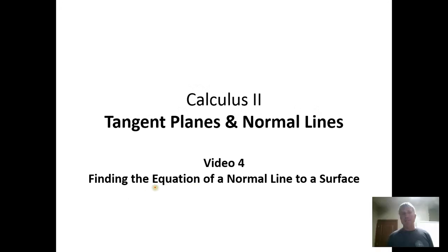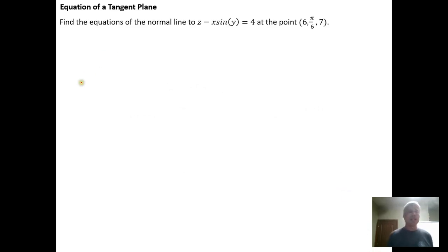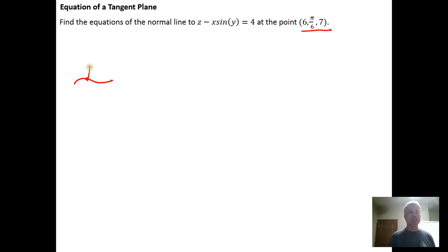In this video, we're going to go over how to find the equation of a normal line to a surface in space. The idea is if we have a surface in space — here's my 2D representation of a surface — and we have a point on the surface, we want to find the equation of the line that is perpendicular to that surface. It's going to be a line that hits the surface at that point and is perpendicular to it.